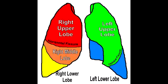How many lobes does the right lung have? The right lung has three lobes. How many lobes does the left lung have? The left lung has two lobes, but it also has a lingula, and this lingula is the homologue of the right middle lobe. The reason the left lung does not have a middle lobe is because this space is occupied by the heart.